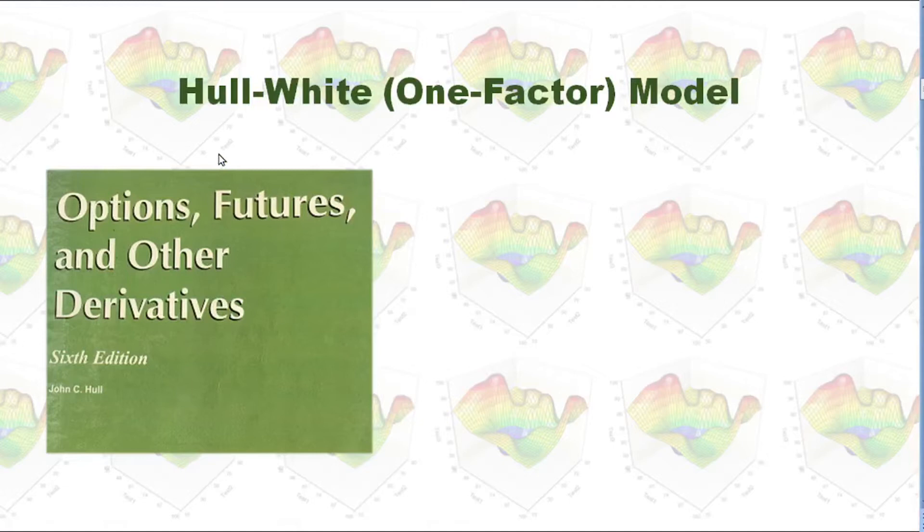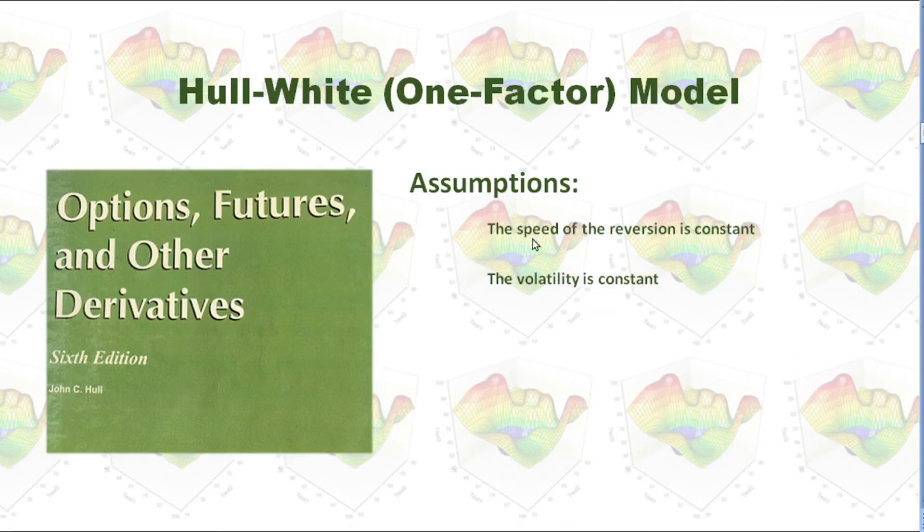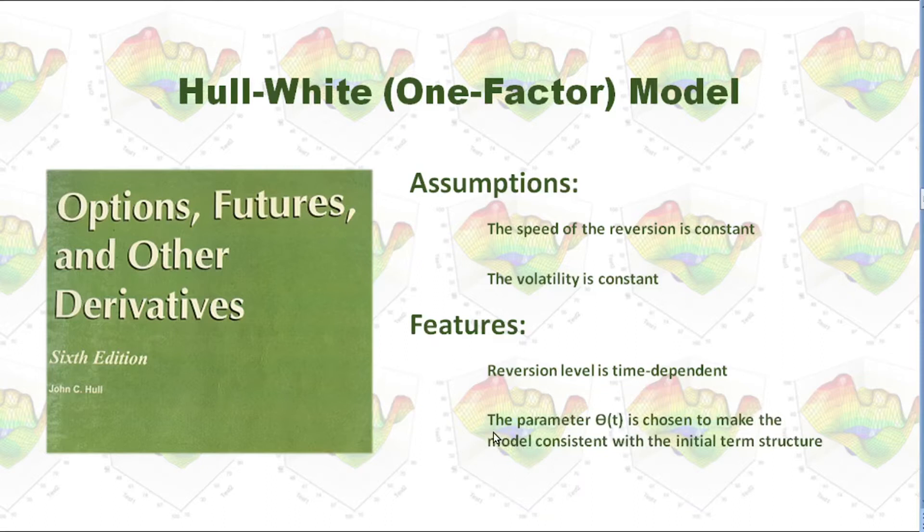First, let's take a look at Hull-White model. Hull-White model is a one-factor model, and it has some assumptions. First, the speed of reversion is constant. Then, the volatility is constant. So in Hull-White model, we have two parameters. It also has some features. Reversion level is time-dependent, and the parameter theta t is chosen to make the model consistent with the initial term structure.